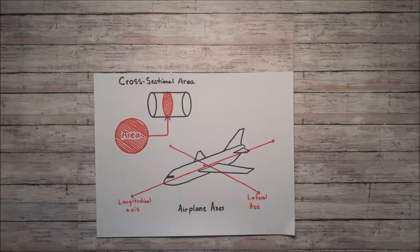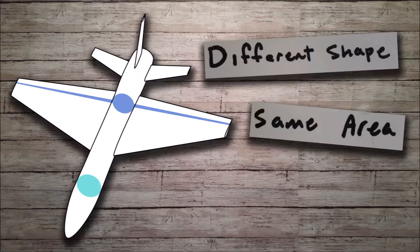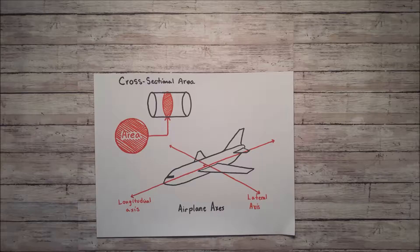The Area Rule states that any two airplanes of the same longitudinal cross-sectional area distribution will have the same wave drag, independent of how that area is distributed laterally — i.e., fuselage or wings. Furthermore, the rule states that to avoid the formation of strong shockwaves, the total area distribution must be smooth.